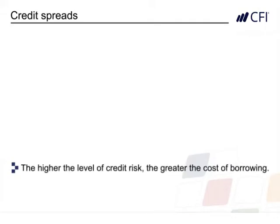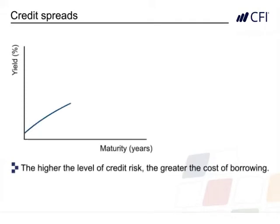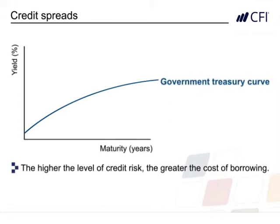Yield curves are determined by current interest rates and the credit risk of those borrowing money. The higher the level of credit risk, the greater the cost of borrowing. Here we have the yield curve for US Treasuries. They have minimal credit risk, and hence a low yield curve.